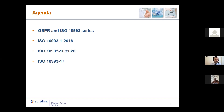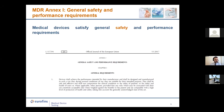ISO 10993-17 is under deep revision. Let's start with the MDR. You are familiar with Annex I, where the general safety and performance requirements are listed. Those requirements are general — we are in the so-called new approach — and they do not provide technicalities on how to comply with them. It's here that we find the need to assess biocompatibility and perform a biological evaluation. The MDR says that particular attention shall be paid to the choice of materials and substances used in a medical device, particularly regarding toxicity.